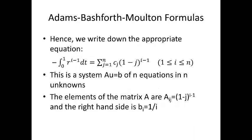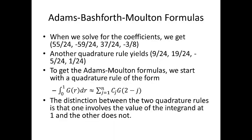So, what we do is we'll write down the appropriate equation. And this ends up being a linear system, Au is equal to b of n equations and n unknowns. The elements of the matrix A are a sub ij equals 1 minus j raised to the i minus 1. And the right hand side is b sub i is equal to 1 divided by i. When we solve for the coefficients, we get the following values, 55 over 24 minus 59 over 24, 37 over 24, and minus 3 eighths. Using another quadrature rule, we can get 9 over 24, 19 over 24, 5 over 24, and 1 over 24.